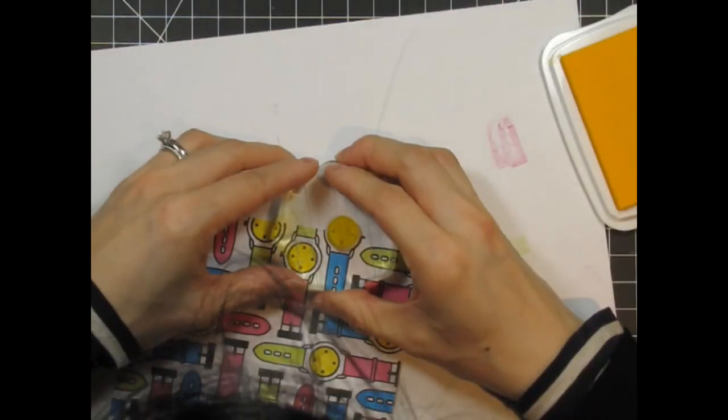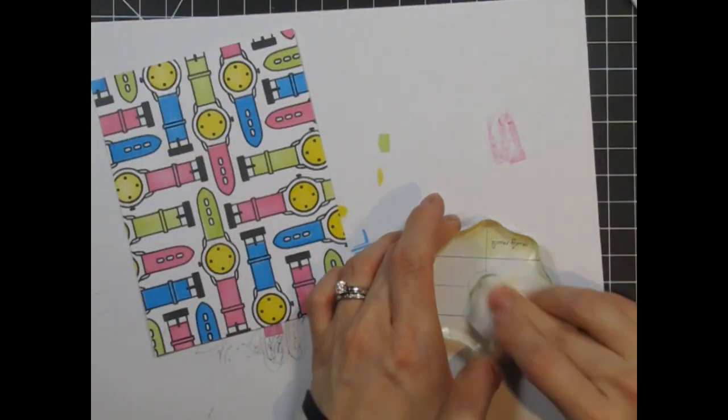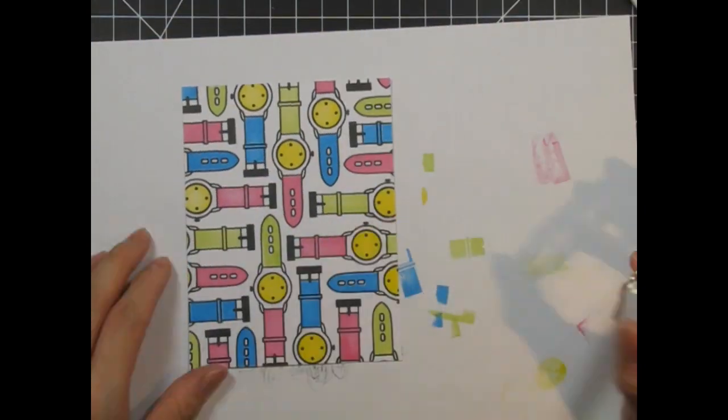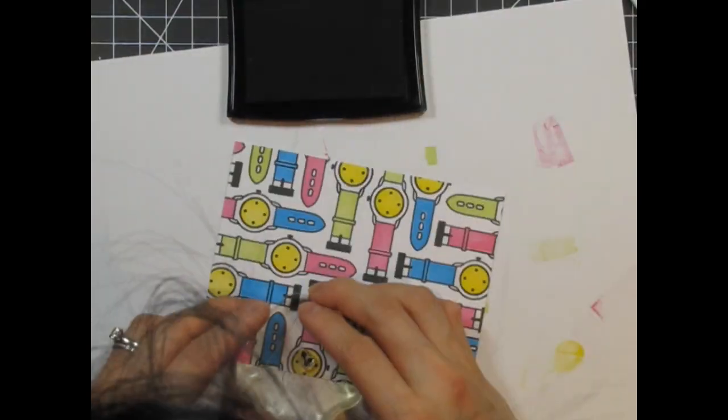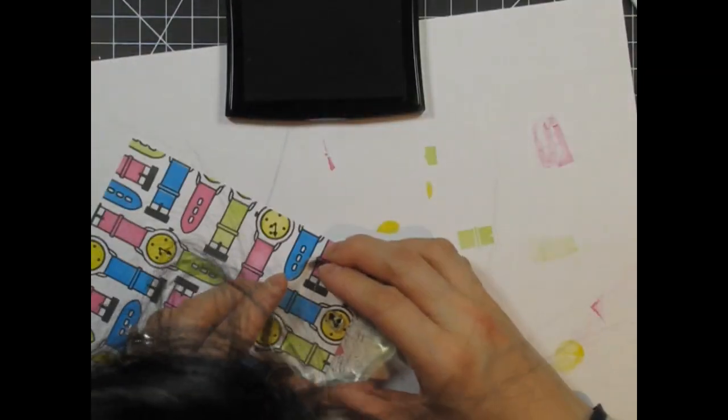Now that the colours are done, I can go ahead and stamp the little arms onto the clock faces. Since I'm stamping on pigment ink, I'm going to use VersaFine Onyx Black to ensure a crisp black outline.